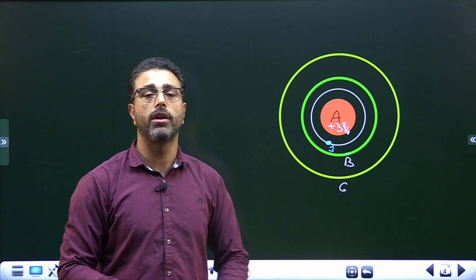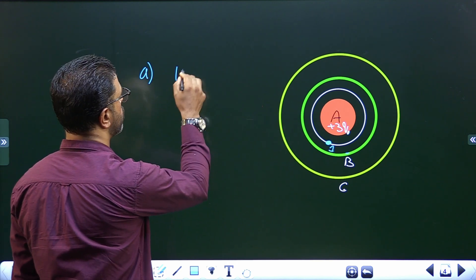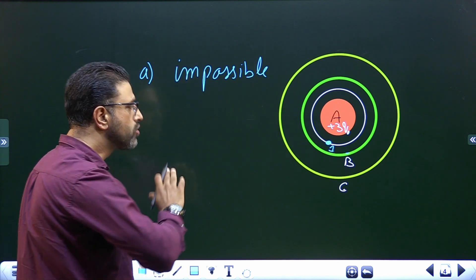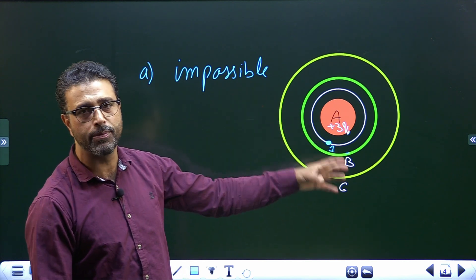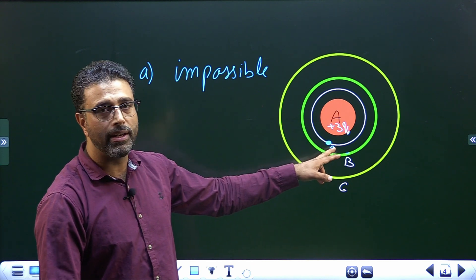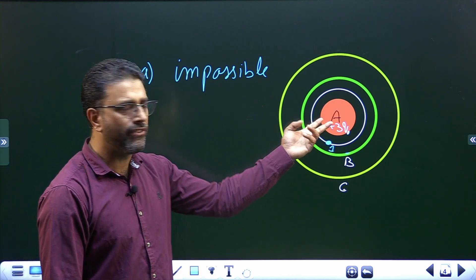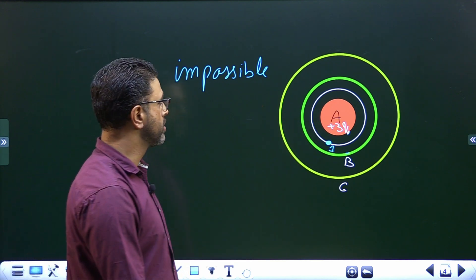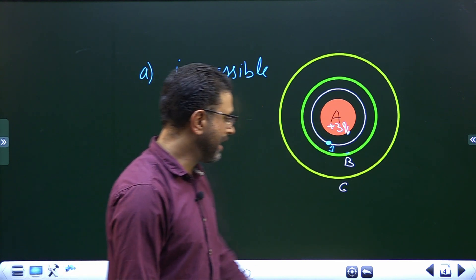So the field at point 1 is only due to A, and that will be non-zero because A has a charge and point 1 lies outside cylinder A. B and C will not contribute anything. Therefore, it is impossible to make the field zero at point 1. It does not matter what charge is on B or C — whether they are zero, positive, or negative, it doesn't matter. The field at point 1 cannot be zero as long as A carries a non-zero charge.